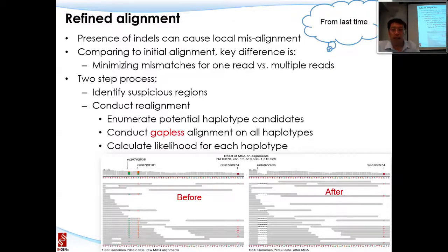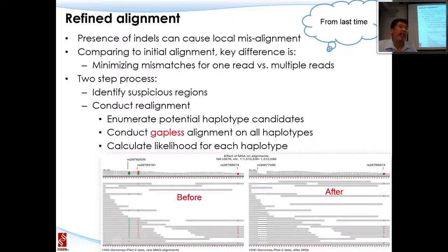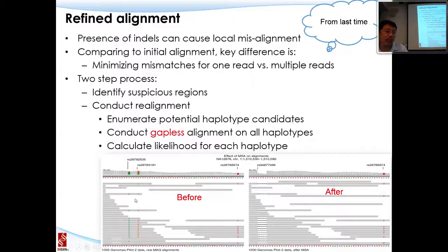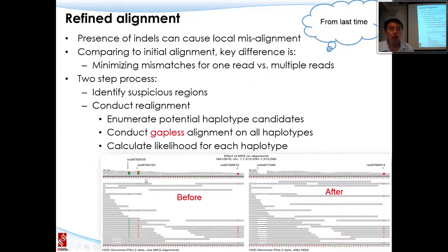To perform refined alignment, there are three steps: first, enumerate all potential haplotype candidates; second, perform gapless phase alignment on all haplotypes; and third, calculate the likelihood of each haplotype. When a novel haplotype increases the overall likelihood, it is selected. In one example, before refined alignment two reads showed apparent SNPs, but after refinement these were revealed as misalignment artifacts—false positives.